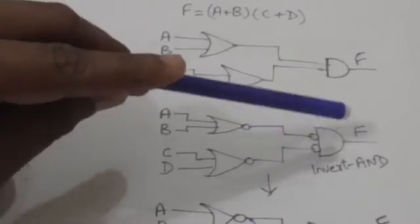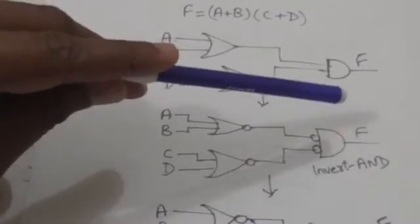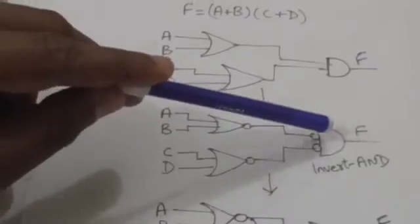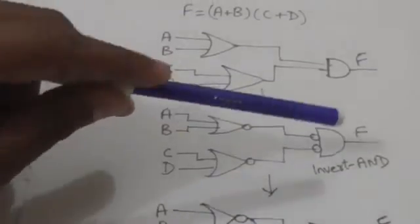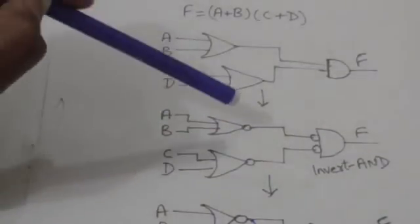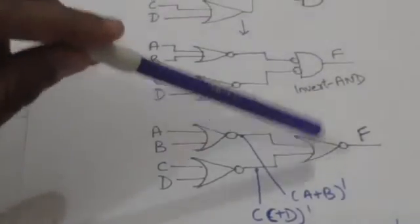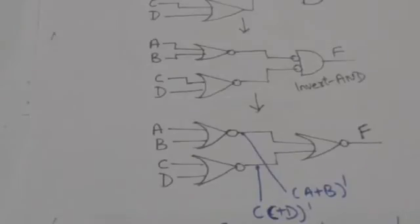When it is complemented twice, the original value is restored. This means this circuit is equivalent to the original circuit. But this is the inverted AND gate — and the inverted AND gate is equivalent to the NOR gate. These are also NOR gates, so these two circuits are equivalent. Here we have replaced the inverted AND gate by the NOR gate.